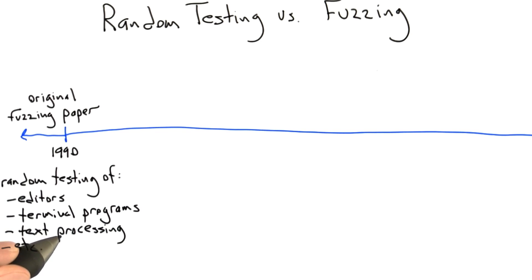What they found is using this incredibly simple technique, that is doing random testing without worrying at all about the input validity problem, they were able to crash a quarter to a third of these utilities on basically any version of Unix that they tested.